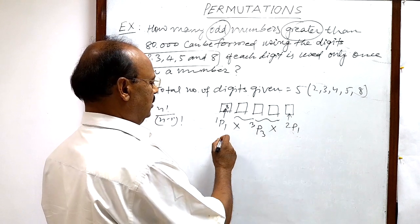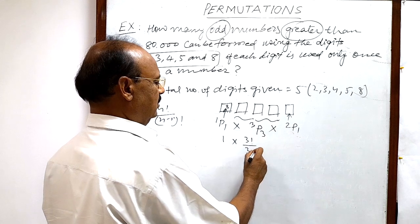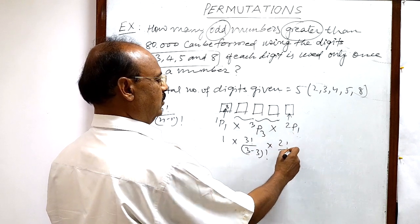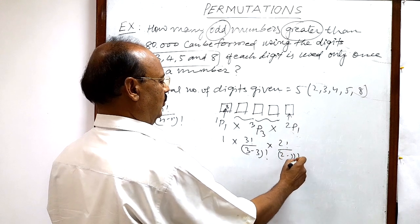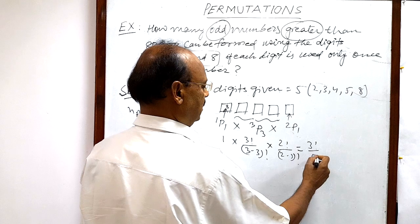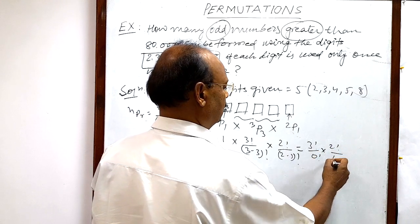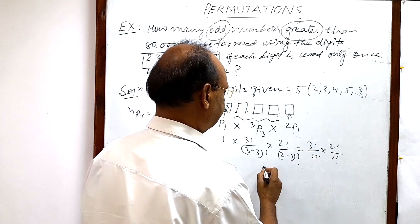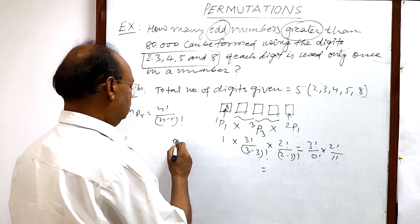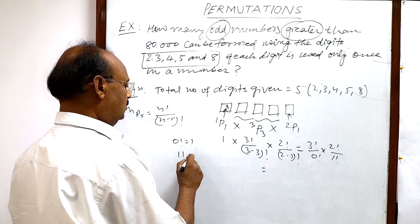So you know 1P1 is equal to 1. 3P3 is 3 factorial by 3 minus 3 factorial. And 2P1 is 2 factorial by 2 minus 1 factorial. So this is equal to 3 factorial by 0 factorial. You know 0 factorial is equal to 1, and 1 factorial is also 1.